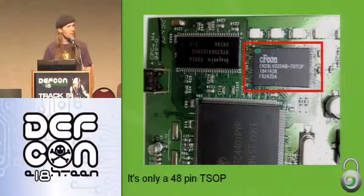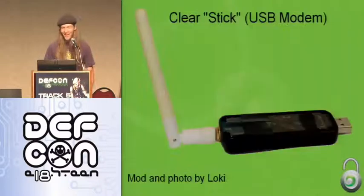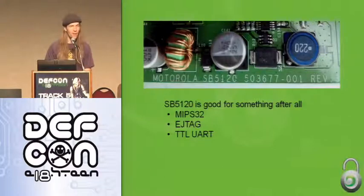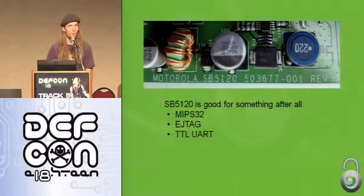It's a Motorola Surfboard — that is correct. Specifically, it's the Surfboard 5120. That board has MIPS32, EJTAG — all the stuff I'm totally familiar with, which is basically the same as on the home router. So I was able to just drop the flash on there, my toolset was already ready, and I was able to pull the flash off just like that.